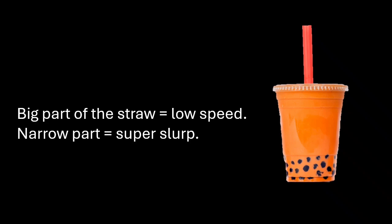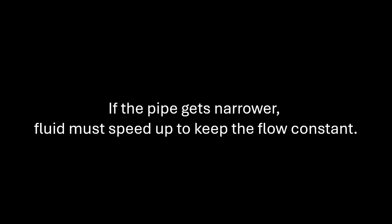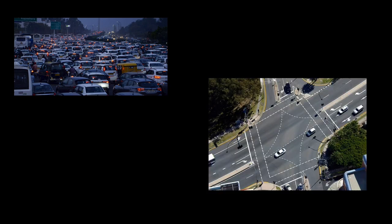The continuity equation. Let's say you're sipping bubble tea through a straw. Big part of the straw equal to low speed, and the narrow part equal to the super slurp. But why? Because the same amount of tea has to get through even when the pipe changes size. And that's the continuity equation, which is A1V1 equal to A2V2. And it's all about conservation of mass. Whatever flows in must flow out. If the pipe gets narrower, fluid must speed up to keep the flow constant. Like garden hose, nozzle, and rockets. This is a plumbing version of traffic management. And the pipe gets thinner speed up. Pipes get wider slow down. No rear ending allowed.